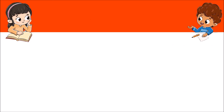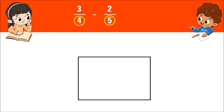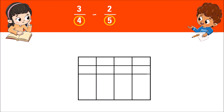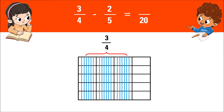Now let's proceed to the subtraction of fractions: three fourths minus two fifths. The denominators are four and five. Make four columns and five rows for the denominator. For three fourths, fill three of the four columns with vertical lines. To represent two fifths, fill the first two rows with horizontal lines.